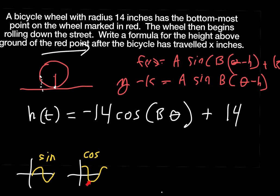Inside the function I'm going to have B·θ, and then I have a vertical shift up of 14. How do I know it's a vertical shift up of 14? Because the wheel never drops below the x-axis — I never drop below ground. The center line of my graph is 14 to the top and 14 below it, but I'm never crossing the ground. So my vertical shift is up 14.